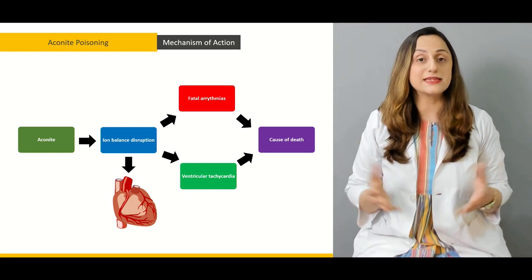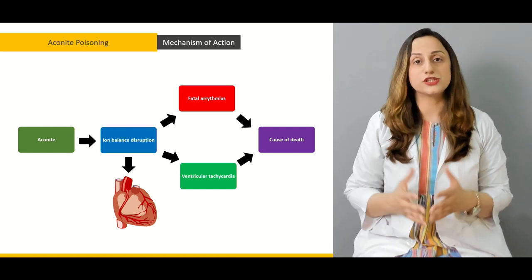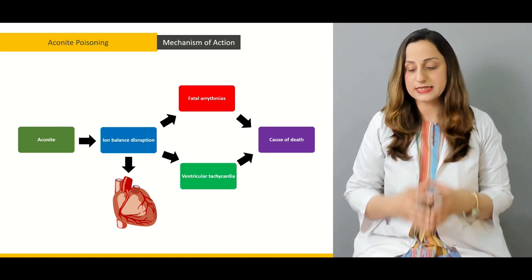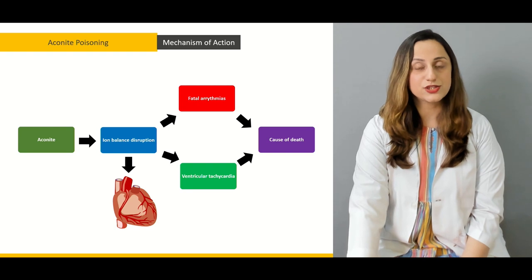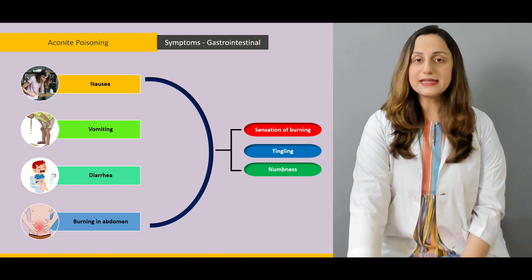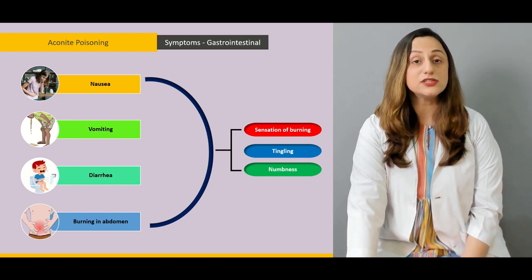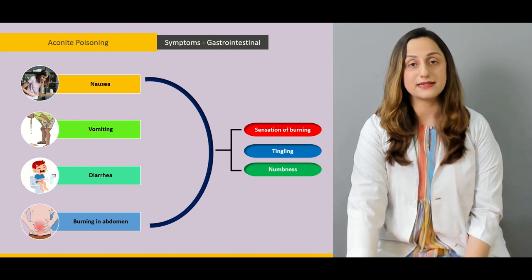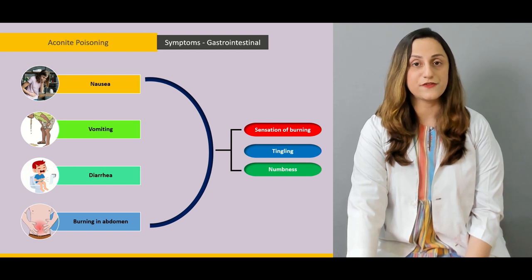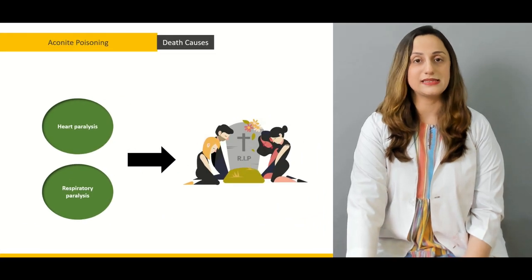The mechanism of action will be discussed, with the most important drug in this group being aconite. The signs and symptoms — the clinical features — include GI symptoms as well, so it's not just the cardiovascular system that is affected. Even the gastrointestinal system is affected, resulting in nausea, vomiting, and abdominal pain.